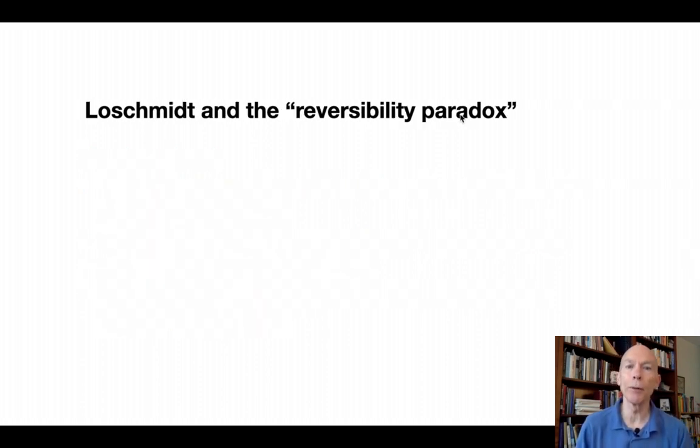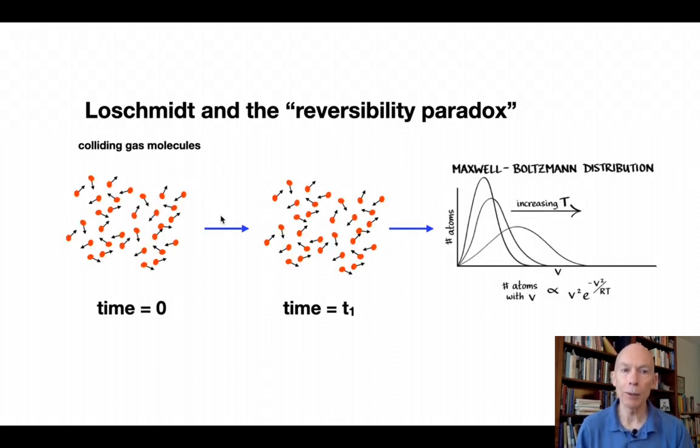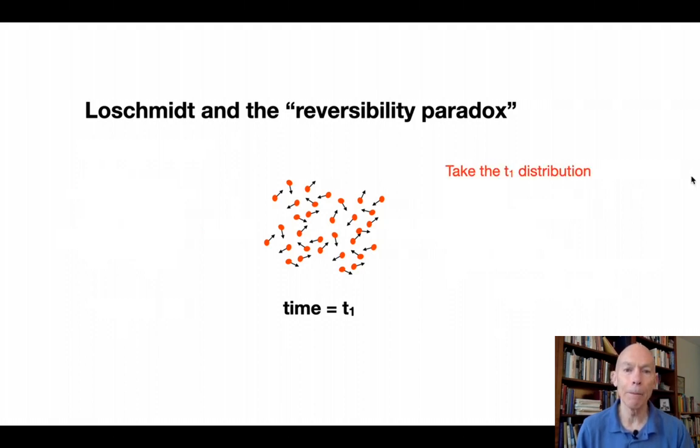So what was it that Loeschmidt did in analyzing Boltzmann's work that led him to become a gadfly? Loeschmidt came up with a reversibility paradox. He wasn't the only one. The scientists in England were also contributing to this, but Loeschmidt was probably one of the more famous and direct ones. What he said was, he looked at this system from the previous slide, gas molecules going from t equals zero to t equals one, going to the Maxwell Boltzmann distribution. He looked at that and he said, wait a minute. Let's look at the t equals one distribution and take that distribution.